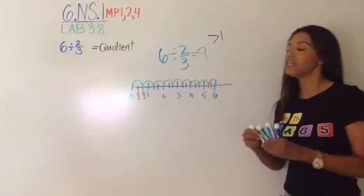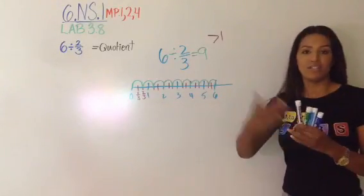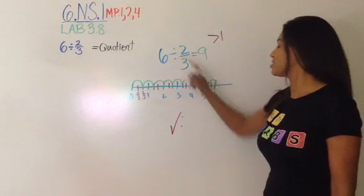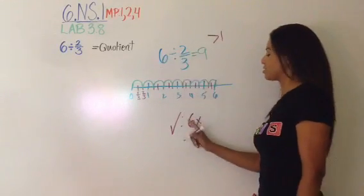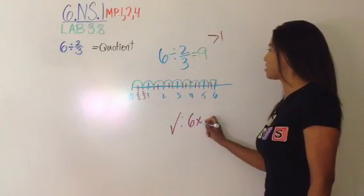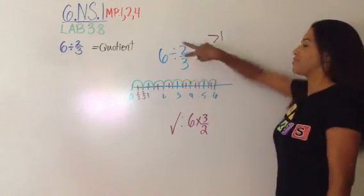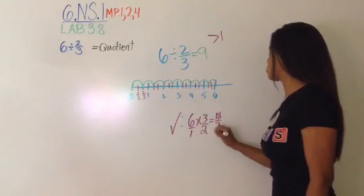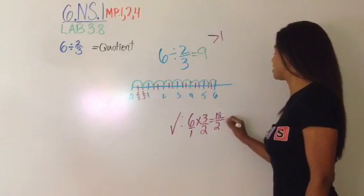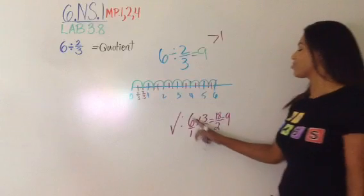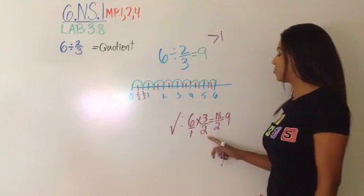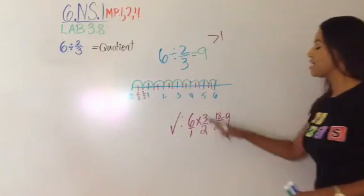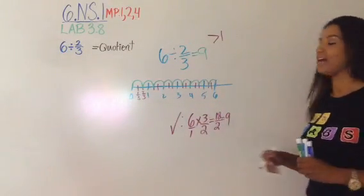By lab 3.8 you should have discovered from labs 3.1 through 3.4 that division is the same as multiplying by the reciprocal. So the algorithm: keep 6 the same, change division to multiplication, and flip 2/3 to its reciprocal 3/2. Multiply straight across: 6 × 3 = 18, 1 × 2 = 2, giving 18/2 = 9. You can also cross-cancel: the 2 in 6 and the 2 in the denominator cancel, leaving 3 × 3 = 9 without needing to simplify.